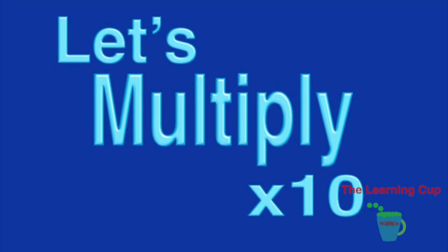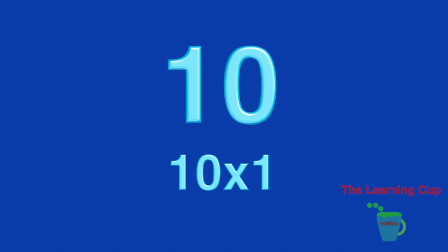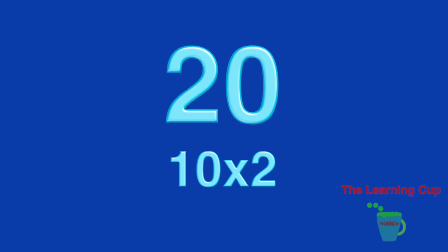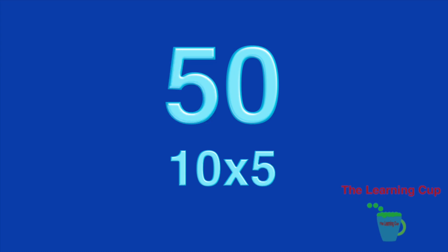Let's multiply by 10. 10 x 1 = 10. 10 x 2 = 20. 10 x 3 = 30. 10 x 4 = 40. 10 x 5 = 50.